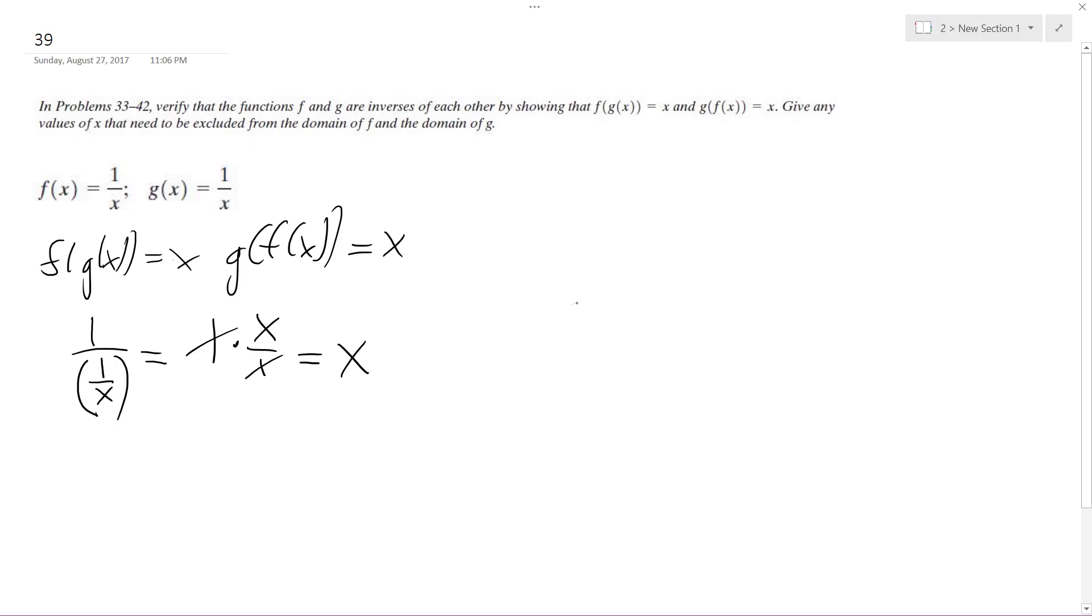And since these are exactly the same, 1 over x, you can probably guess what this is going to be. We get 1 over 1 over x again, and it's just x. So that proves g of f of x equals f of g of x, which means they are inverses of each other.